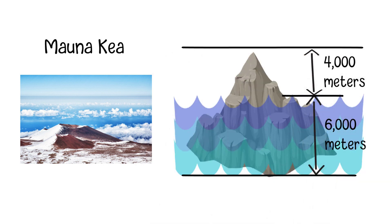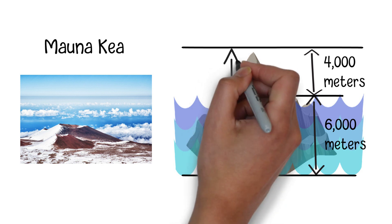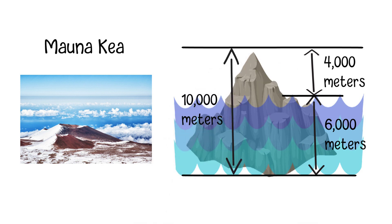As a result, the total vertical distance from the mountain's base to its peak is approximately 10,000 meters. This is why many people consider Mauna Kea as the tallest mountain globally.